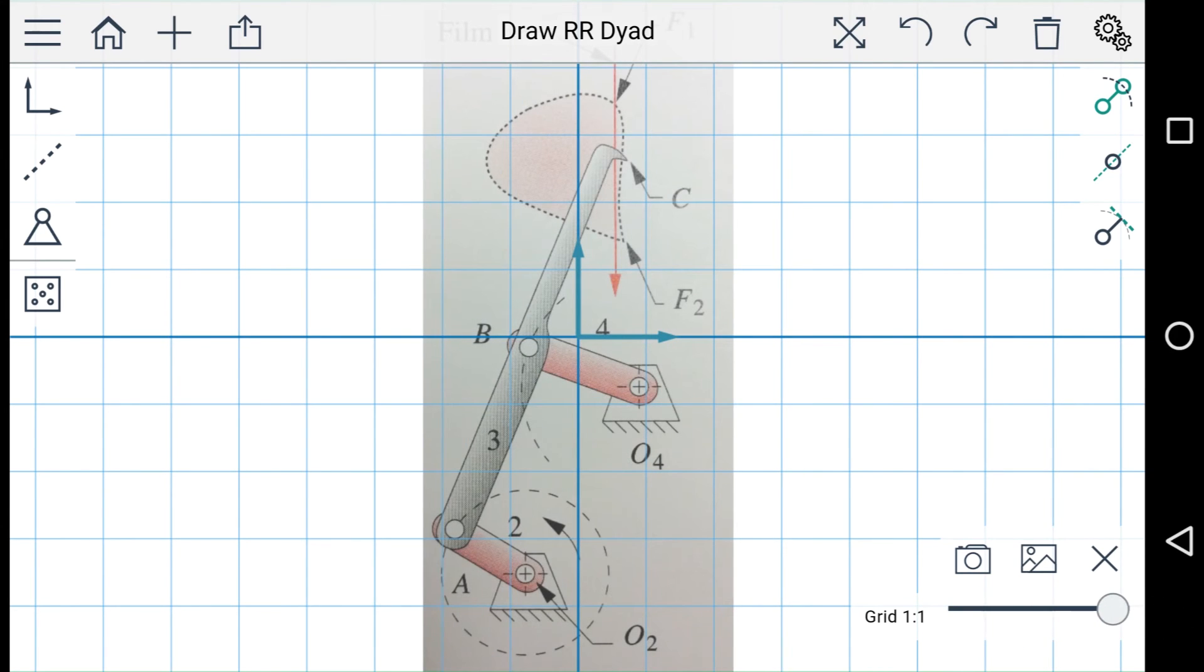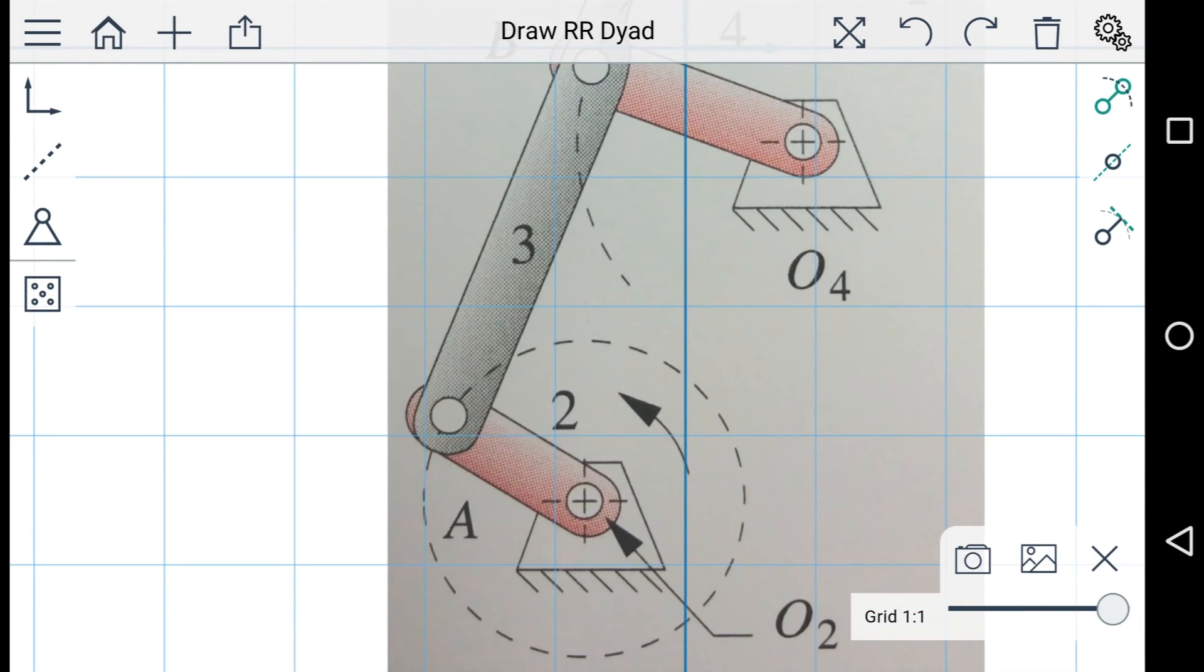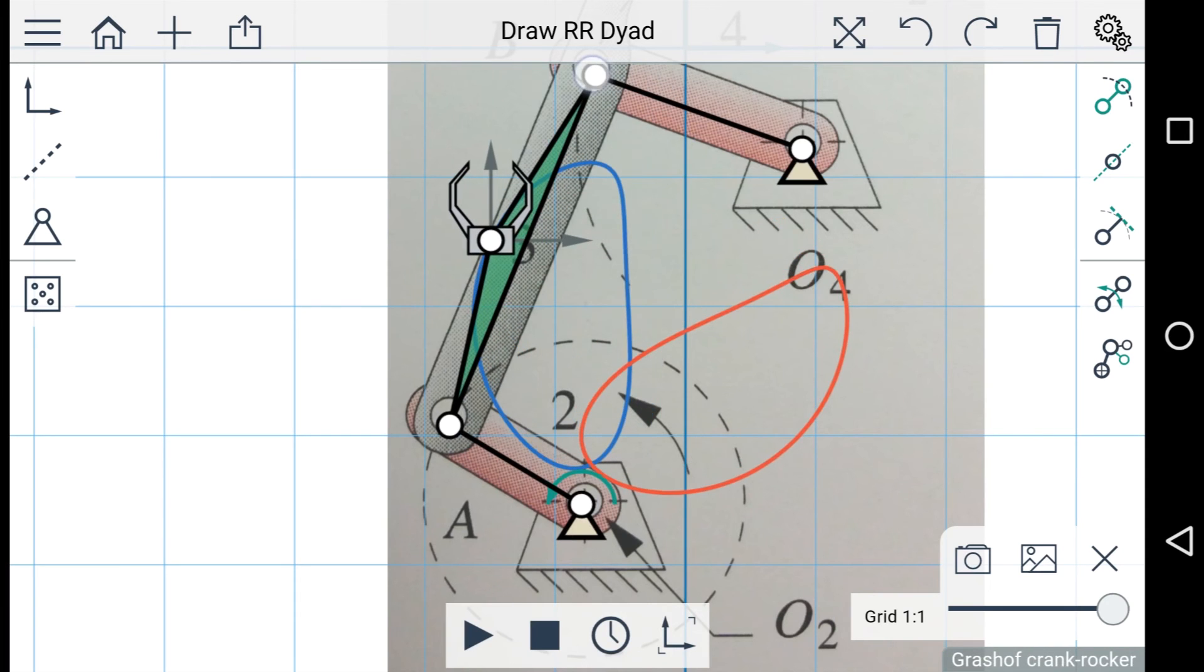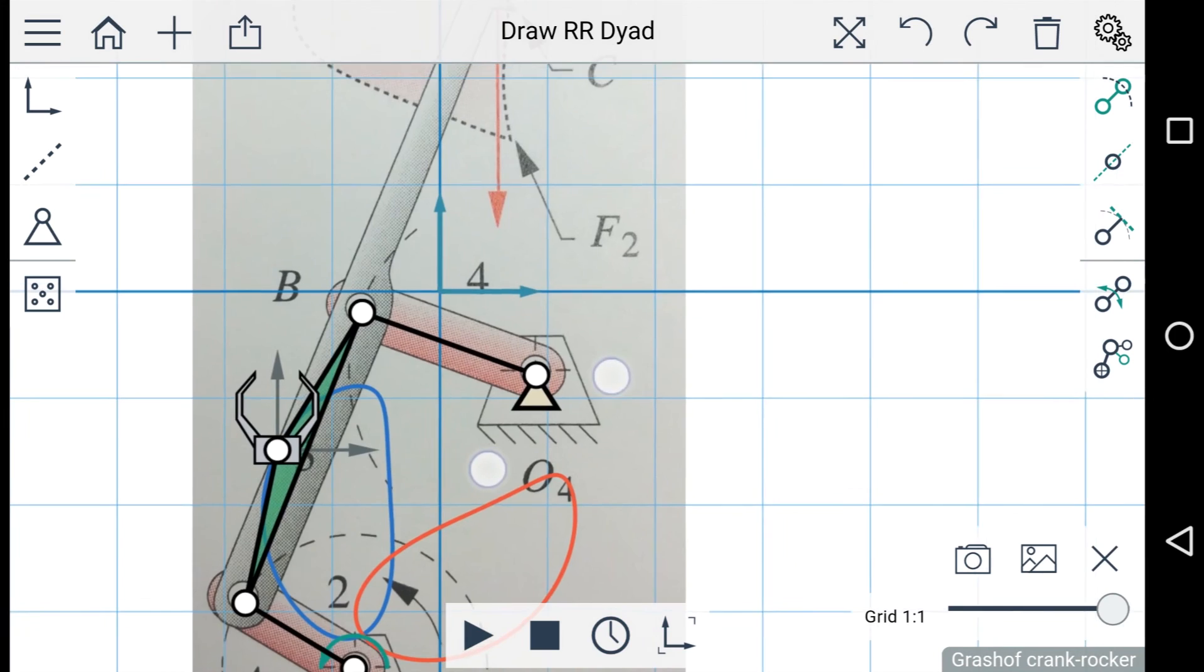So we can recreate this mechanism in MotionGen. So let's zoom in here and draw the first dyad. And the second dyad. And let's move the end effector out to the hook here.